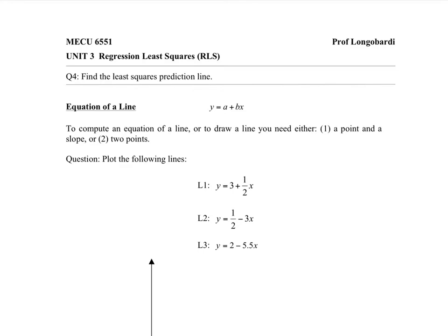Okay, let's draw some lines. As a review, this is the equation of a line that you are familiar with. Y equals A plus BX. A is known as the Y-intercept, and B is the slope.